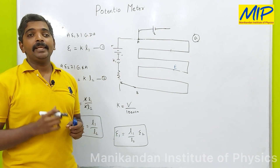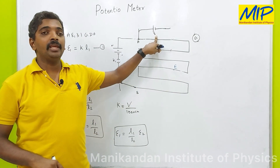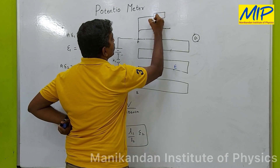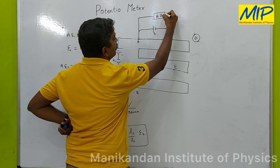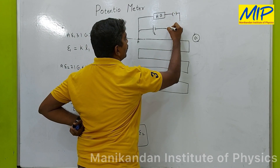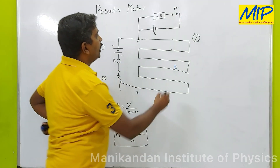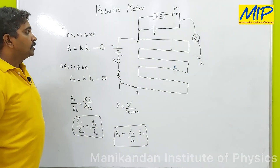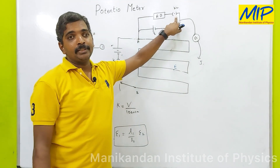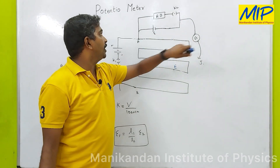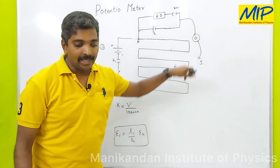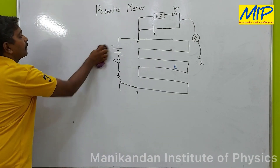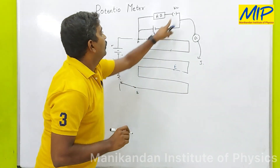Now I will explain how to find the internal resistance of a given cell of EMF E. To do this, I need a resistance box — a variable resistor — connected with a key K2. This is connected with a galvanometer, which is connected with a jockey. When K2 is in the open condition, the resistance box is not connected; only the cell of EMF E is connected with the galvanometer.